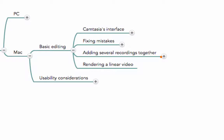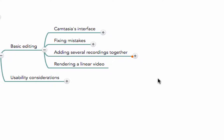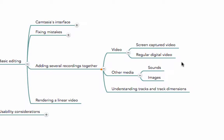Adding several recordings together. So far I have been assuming that you're going to give your lecture or your recording in a single go and that you're going to be able to cut afterwards. But that is not necessarily the case. You can do small recordings that sequentially add up and later on you can paste them together using Camtasia. We're going to learn how to place in the timeline screen capture videos, regular digital videos, sounds, images, and we'll spend some time understanding the tracks in the timeline and track dimensions in the viewing area.